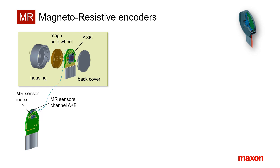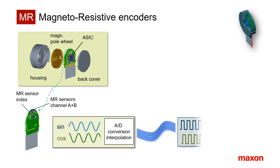MR uses the fact that in certain thin film materials, the electrical resistance changes with the relative direction of current flow and magnetic field. The multipole magnetic pole wheel mounted on the motor shaft creates the necessary magnetic field changes at the sensor positions. The MR sensors are designed to create sine and cosine type signals for each magnetic pole, which are further processed to generate the typical rectangular incremental encoder pulses. The resolution depends on size and interpolation.